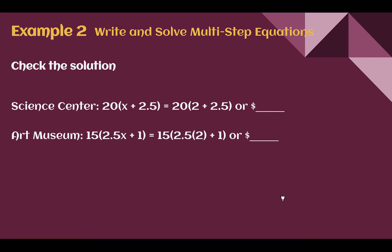Let's check the solution. For the Science Center: 20 times ($2 plus $2.50) equals 20 times $4.50, which is $90. For the Art Museum: 15 times (2.5 times $2 plus $1) equals 15 times ($5 plus $1) equals 15 times $6, which is also $90. Both totals match, confirming our answer.